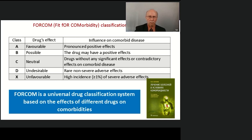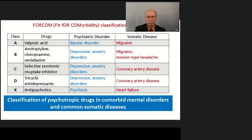Here you see the 12th edition of the book with the FOCAM classification, published by the CEA in Russia. Here is an example of the classification of psychotropic drugs in comorbid mental disorders and somatic diseases. For example, valproic acid is approved for migraine prevention. On the other hand, antipsychotics increase the risk of sudden death, especially in patients with heart failure.